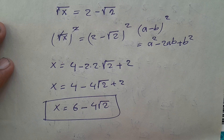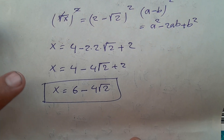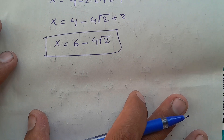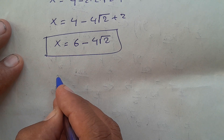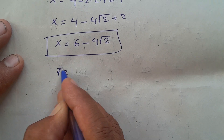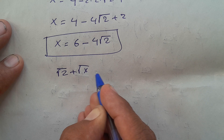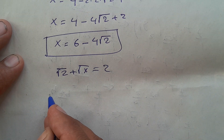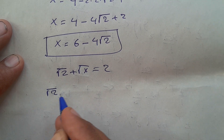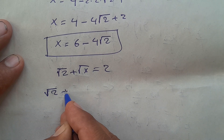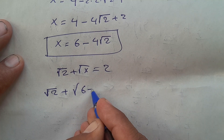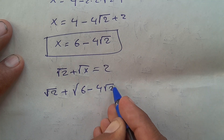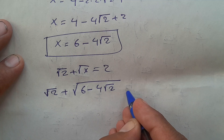So now let's check to make sure that this is correct and that this is the real value of x. The question was square root of 2 plus square root of x equals to 2. Now, substituting x, I have square root of 2 plus square root of 6 minus 4 square root of 2, equals to 2.